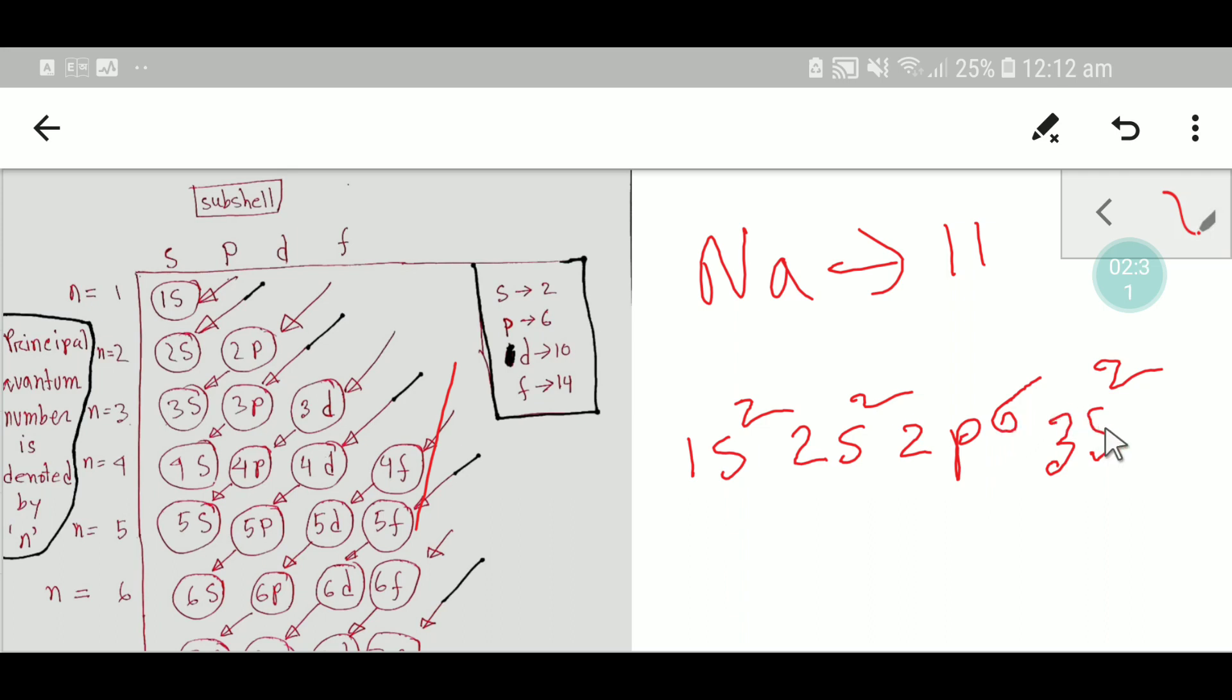So now we have 2 + 2 + 6 = 10 electrons plus 1 = 11 electrons. This is the electronic configuration of sodium: 1s² 2s² 2p⁶ 3s¹.